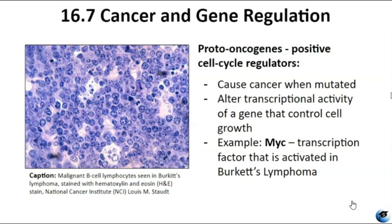Proto-oncogenes are positive regulators in the cell cycle contributing to normal cell growth and division. When these genes undergo mutations, they can transform into oncogenes with the potential to cause cancer. A well-known example is MYC, a transcription factor regulating expression of genes involved in cell growth. In certain cancers like Burkitt's lymphoma, MYC becomes aberrantly activated due to specific mutations, leading to uncontrolled proliferation and tumor formation.